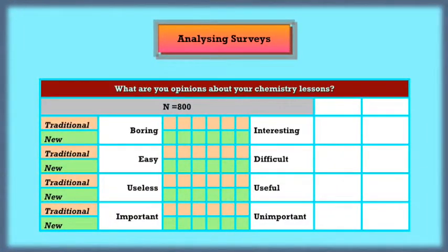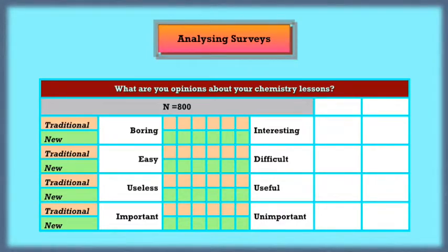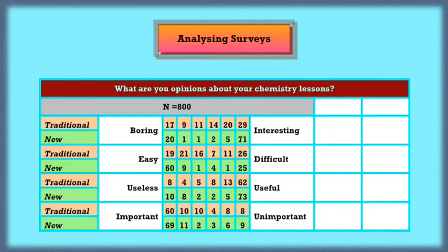Here are just four questions that they were asked. They were asked to tick a box between the words boring and interesting, indicating what they thought of their chemistry lessons. Here are the percentages that ticked the boxes from the two groups. The question is, does the new group, that's those who were taught with the new materials, differ from the traditional group? Or is it just chance?